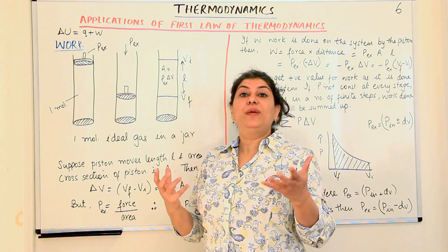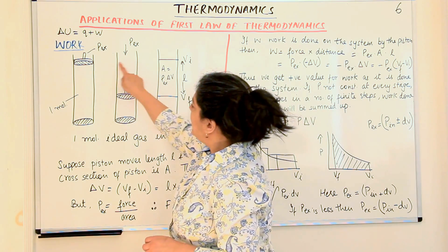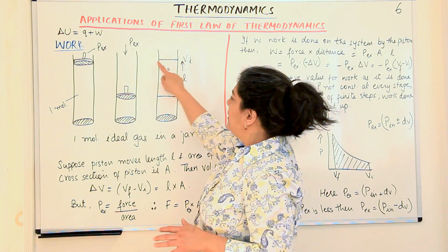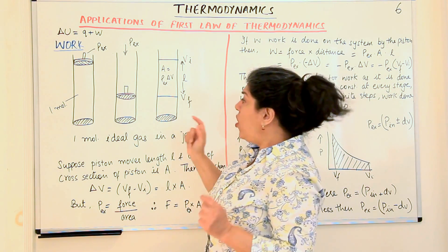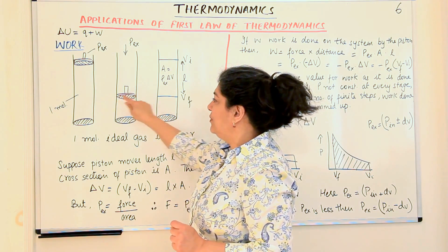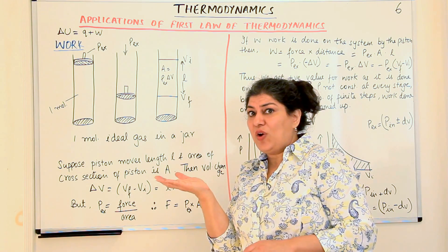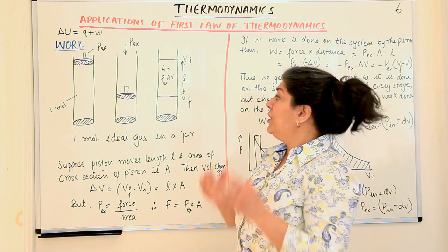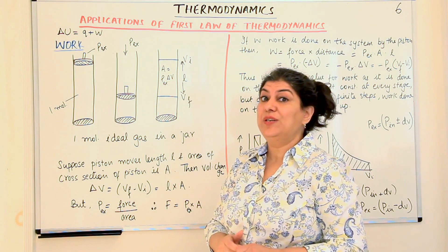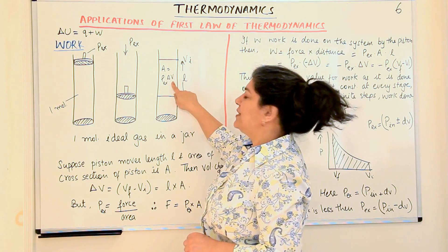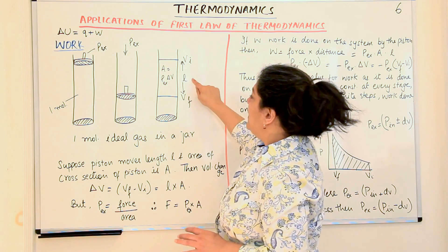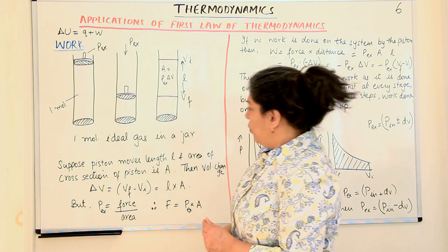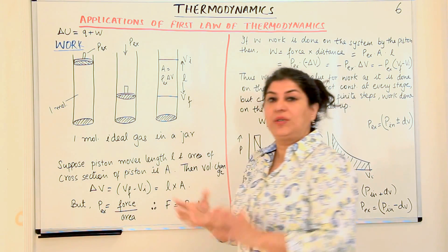Volume is area times length. If we know the area of cross section of the jar — which equals the area of cross section of the bottom, or anywhere in the jar, or the surface area of the piston — we can calculate the volume. Now, the work formula involves P external and delta V, which I will explain. Length times area gives you the volume, so having understood this, let us move on to the calculations and derivations.